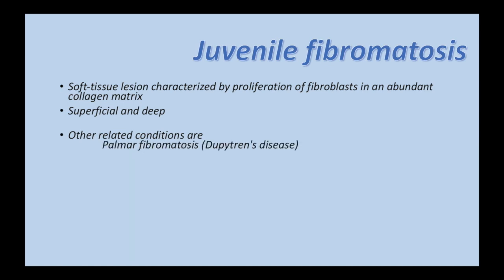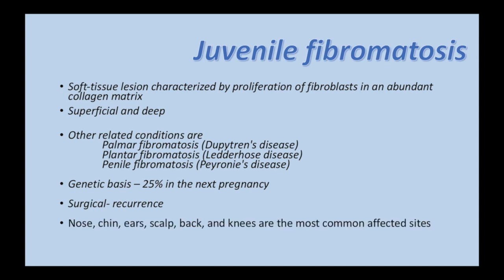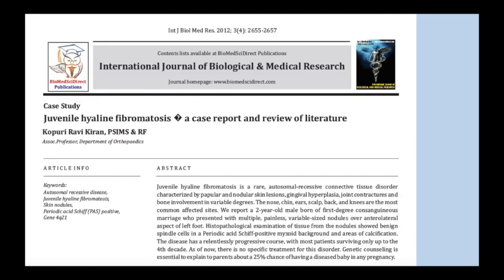Related conditions include palmar fibromatosis, plantar fibromatosis, and penile fibromatosis — all looking more or less similar on MRI. We used to think these conditions may not have a genetic basis, but this is clearly associated with consanguineous marriage and is an autosomal recessive disease. Parents should be warned of a 25% chance in the next pregnancy. Surgically, these are prone to recurrence. Common locations include the nose, chin, ears, scalp, back, and knees. Abdominal desmoid tumors are also related to this fibromatosis group of disorders.